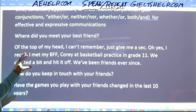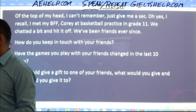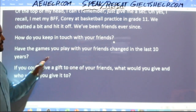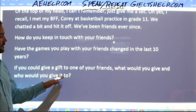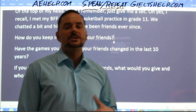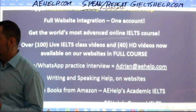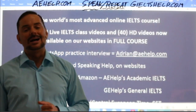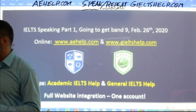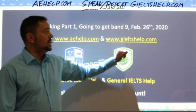A few more homework questions: 'How do you keep in touch with your friends?' 'Have the games you play with your friends changed in the last 10 years?' And 'If you could give a gift to one of your friends, what would you give and who would you give it to?' These are getting more difficult — practice them at home for homework and send me your recording to adrian@aehelp.com and I will estimate your IELTS speaking score. Make sure to check us out at aehelp.com for academic IELTS and gieltshelp.com for general IELTS — lots of HD videos, practice exams, and a fully interactive course for your phone, tablet, or PC.